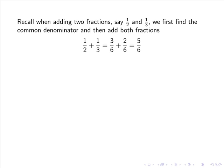Recall when adding two fractions, say 1/2 and 1/3, we first find the common denominator and then add both fractions. The common denominator of 2 and 3 is 6, so this can be expressed as 3/6 plus 2/6, or simply 5/6.